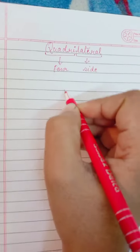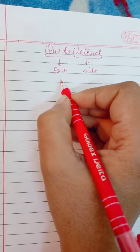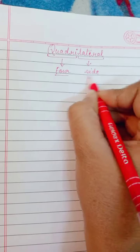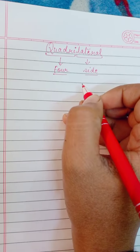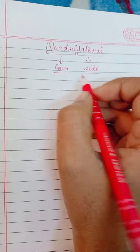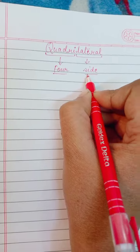So, we can say a quadrilateral is a figure bounded by four line segments or four sides. So, the definition of quadrilateral is a figure bounded by four line segments.